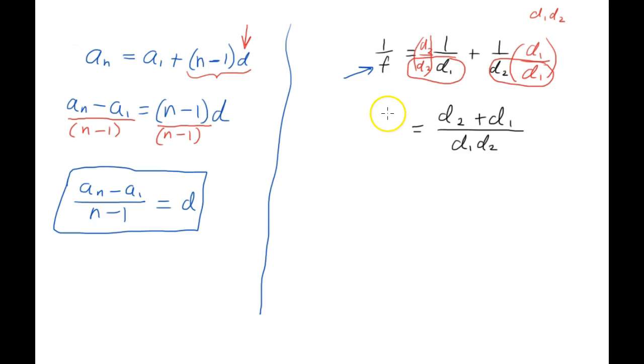On the left hand side we haven't done anything to this left hand side we just have 1 over f still. So it's very important to understand that we haven't cleared the fractions we've just added these two fractions so those are different techniques.